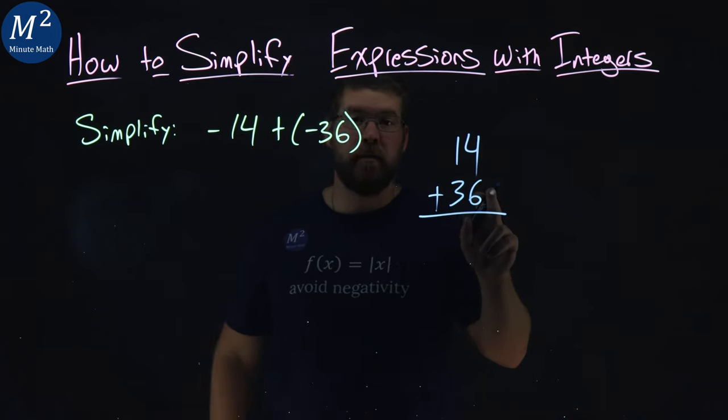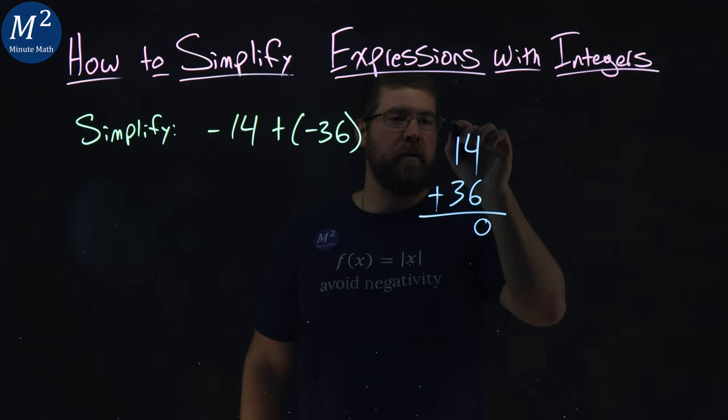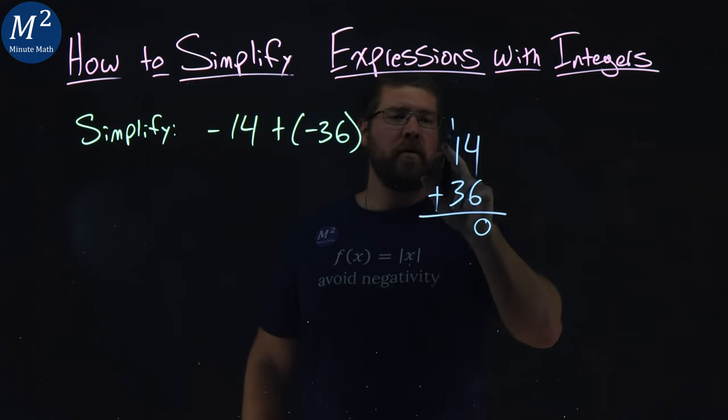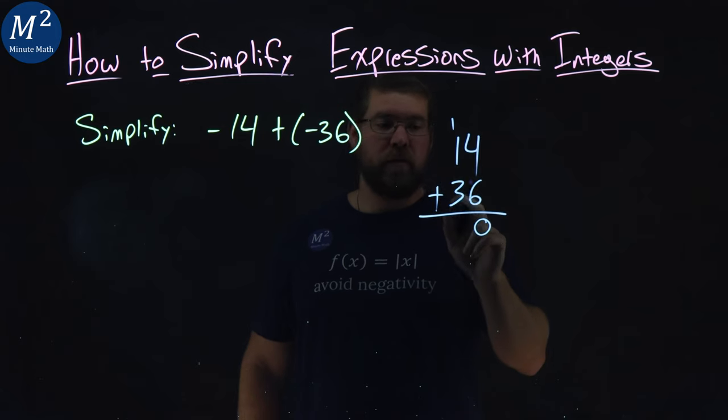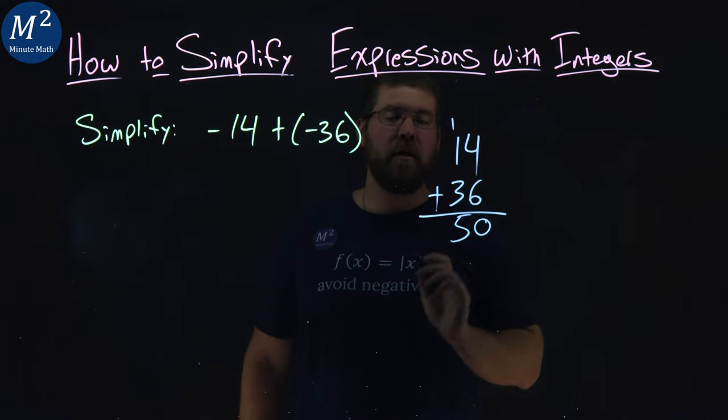4 plus 6 comes out to be a 10. 0 carry the 1. 1 plus 1 is a 2, plus a 3 is a 5, and we got a 50.